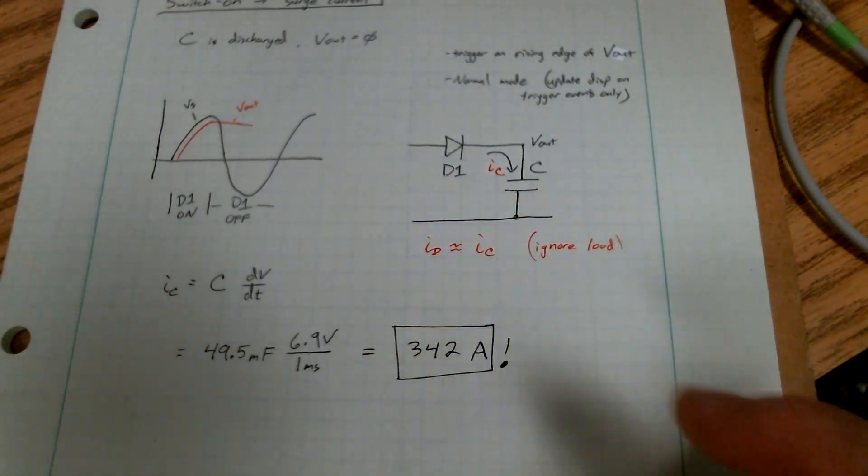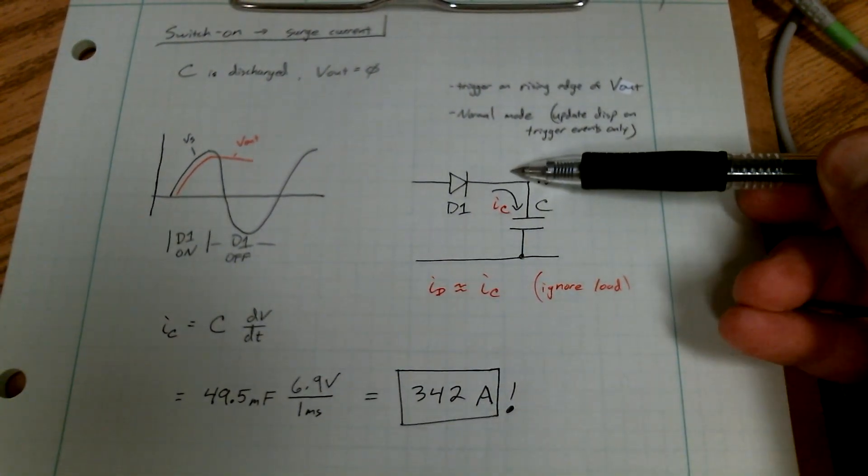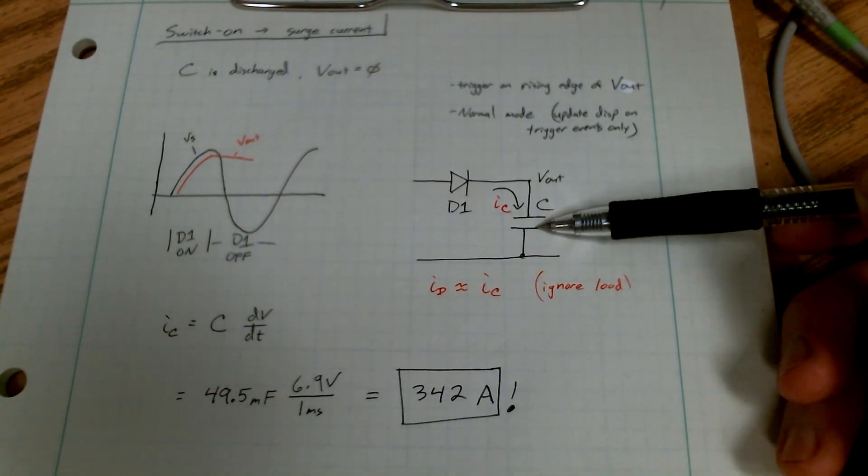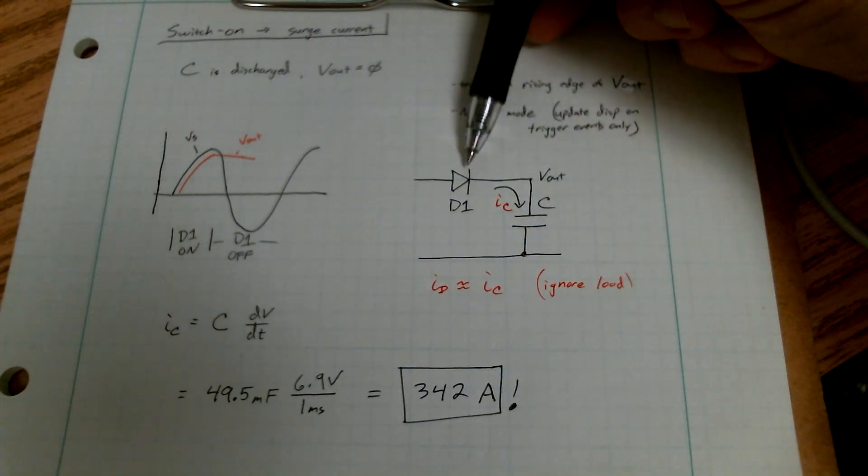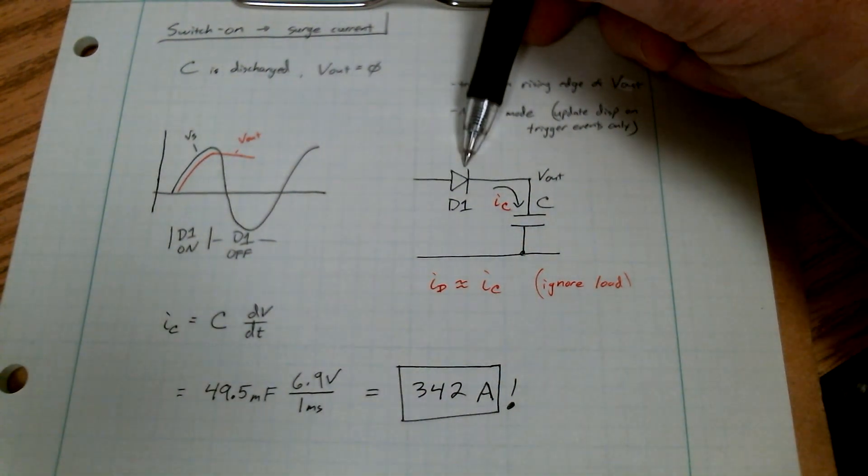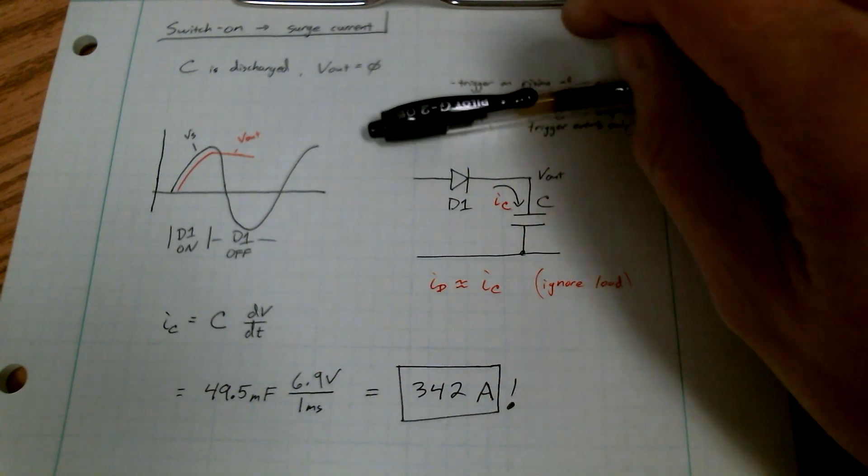Oh my goodness. 342 amps is going through diode one and this capacitor at that moment, or when you measured that slope. This diode has to survive that. In a data sheet, we have a parameter called surge current.